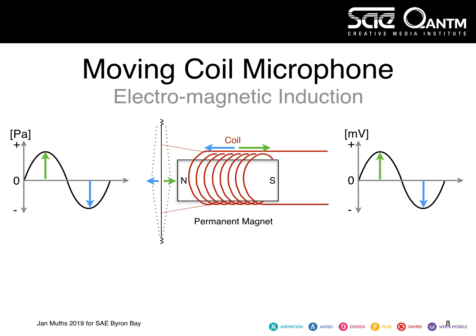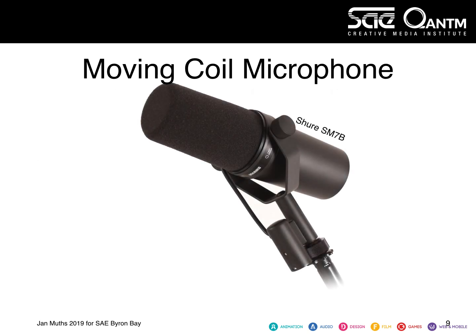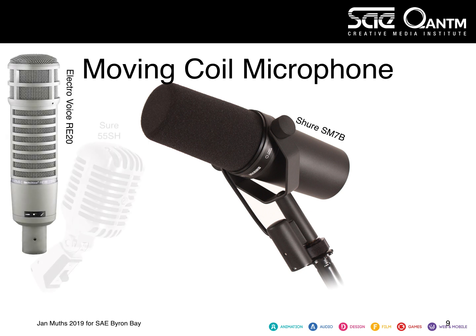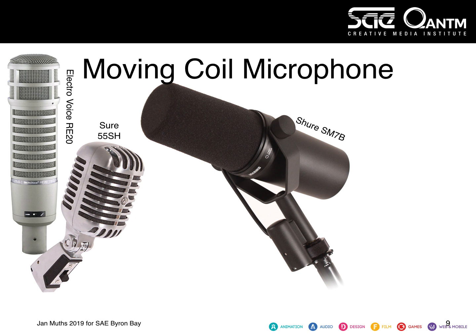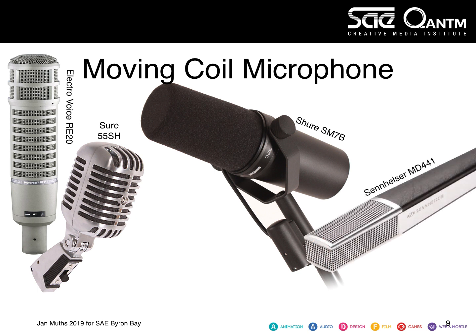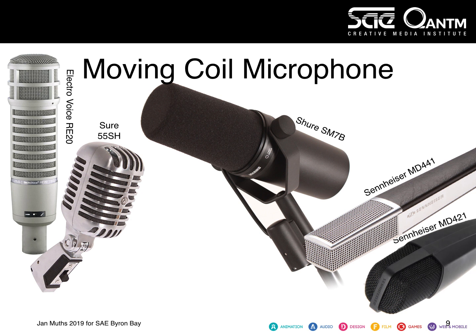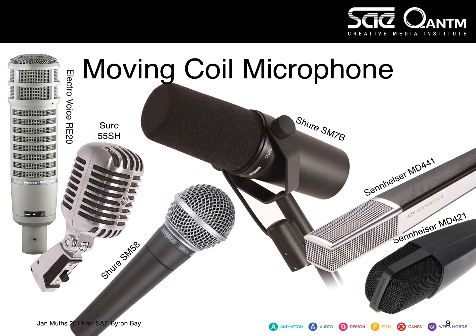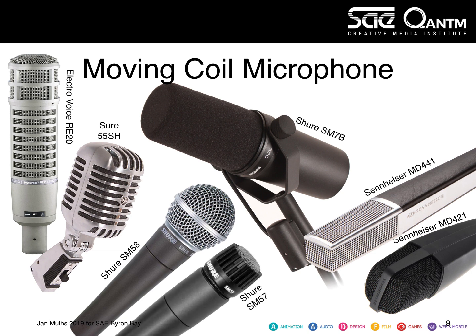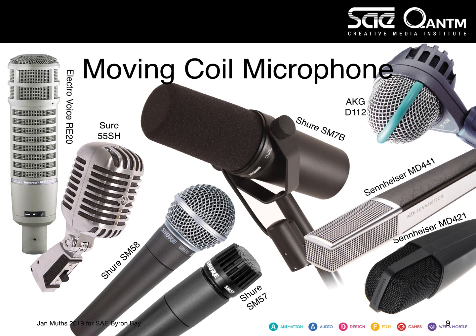Examples of moving coil microphones include the legendary Shure SM7B, the Electrovoice RE20, the Shure 55SH — also known as the Elvis microphone — the Sennheiser MD441, which sounds very good on snare drums, horns, and many other applications, and the Sennheiser MD421, a standard microphone for toms, dialogue, and horns. The Shure SM58 is one of the best-selling microphones in the world and a standard microphone for live sound vocals. Its brother, the Shure SM57, is a standard microphone for instrument recording — it works on snares, guitars, and many other signals. Lastly, a specialist for kick drums: the AKG D112.